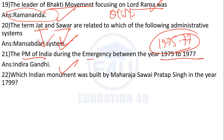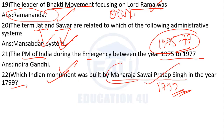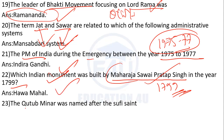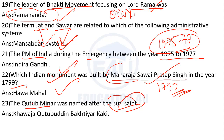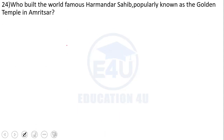Which Indian monument was built by Maharaja Sawai Pratap Singh in the year 1799? The answer is Hawa Mahal.